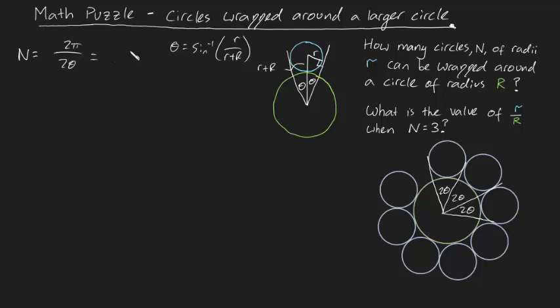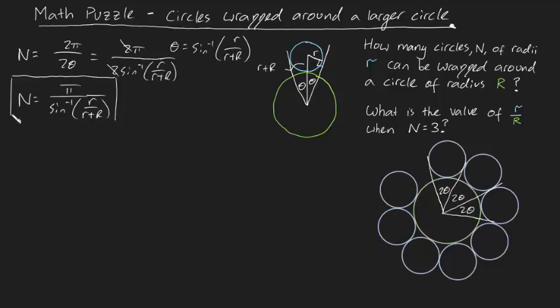And in fact you can write that as 2π divided by 2 times arcsin of r/(r+R). And we can simplify that as N is going to be equal to π divided by arcsin of r/(r+R). There we go. That's a generalized expression for N.